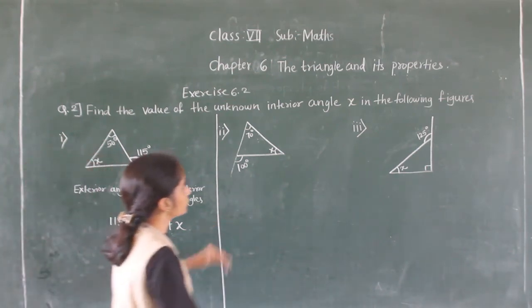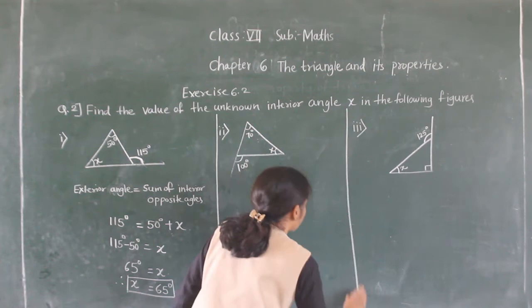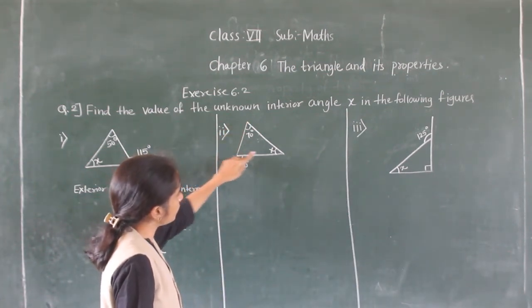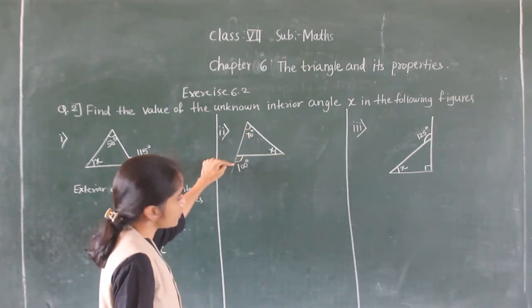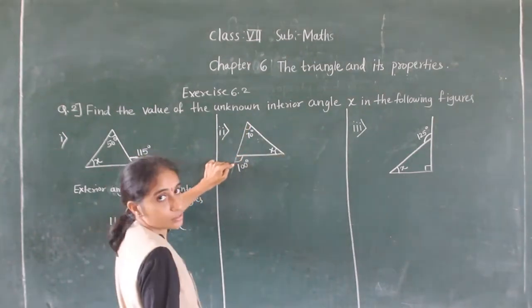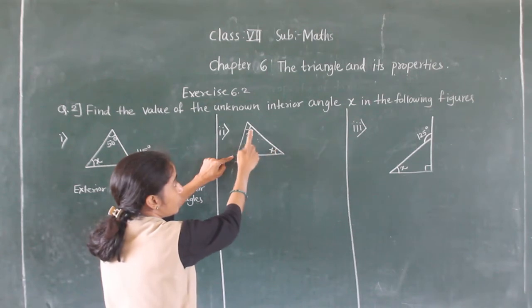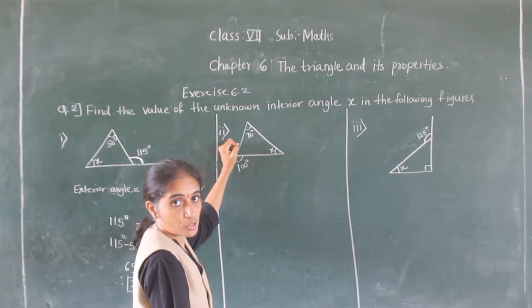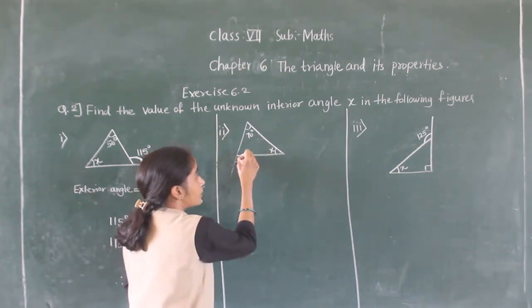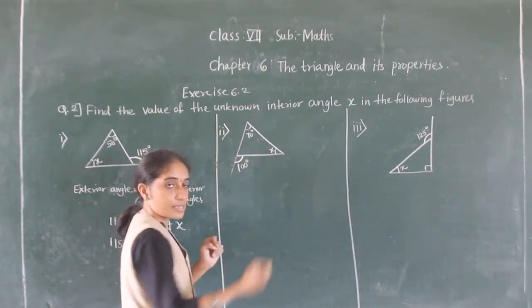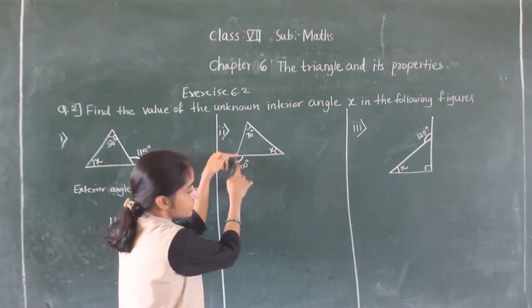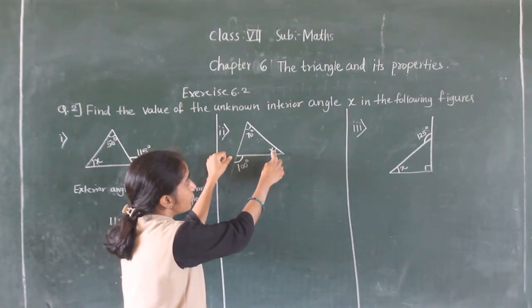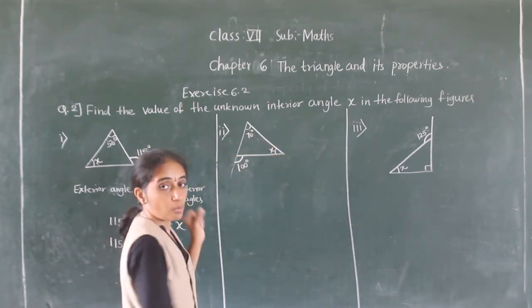Now the next angle. See this angle — it is also an exterior angle of this triangle. The interior opposite angles are 70 degrees and x. And 100 degrees is the exterior angle. So 70 degrees and x are the interior opposite angles.